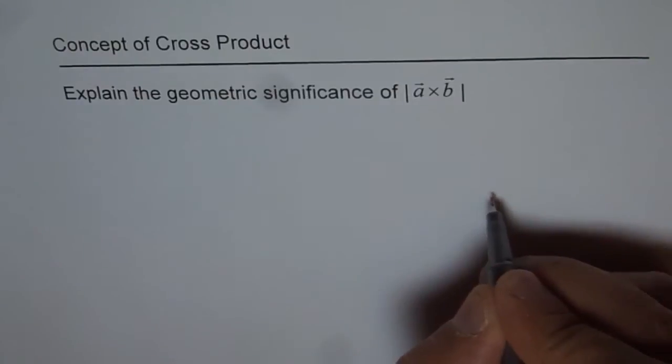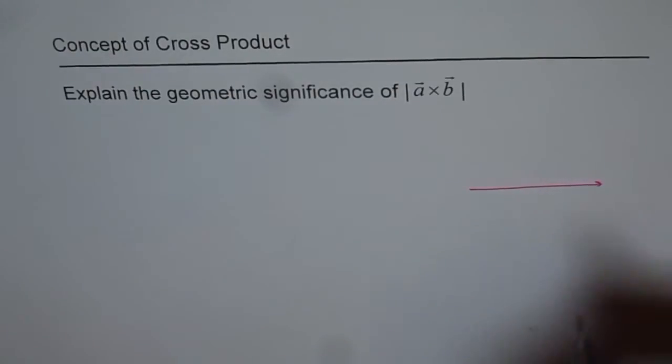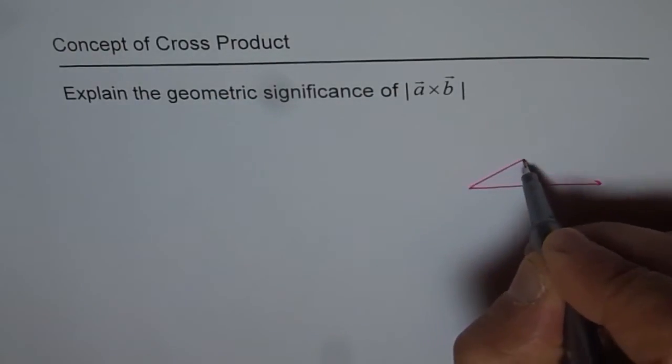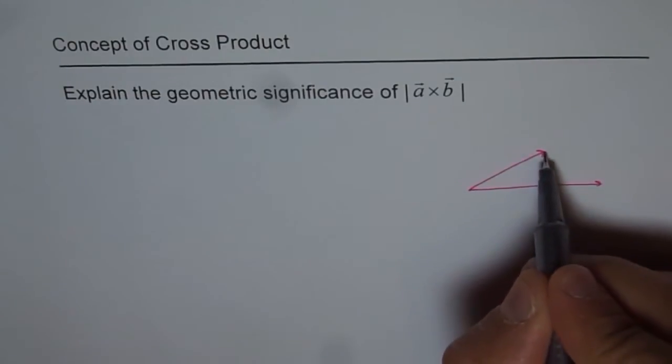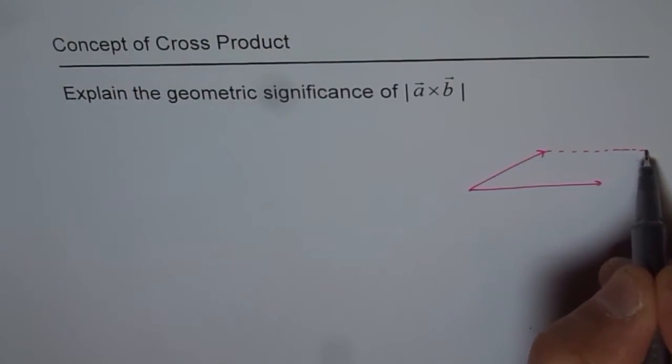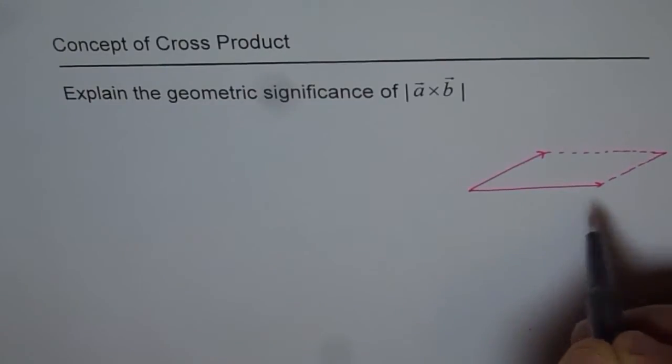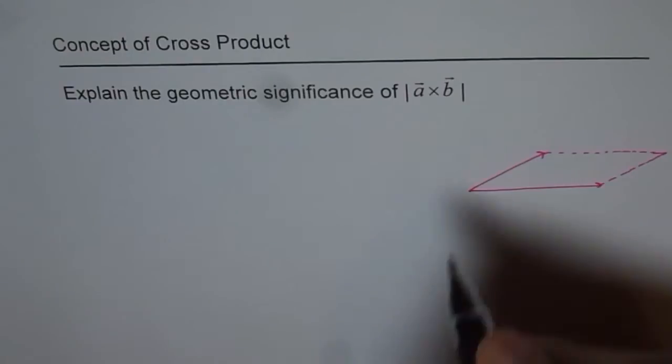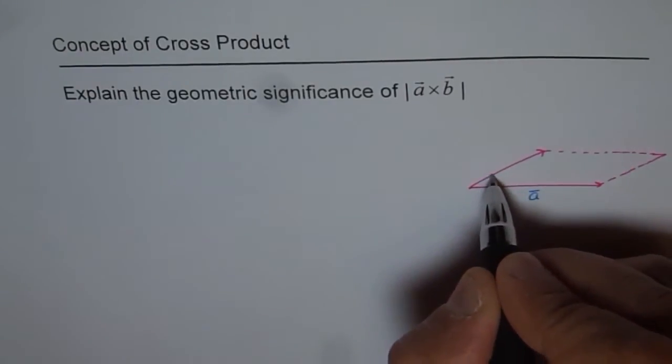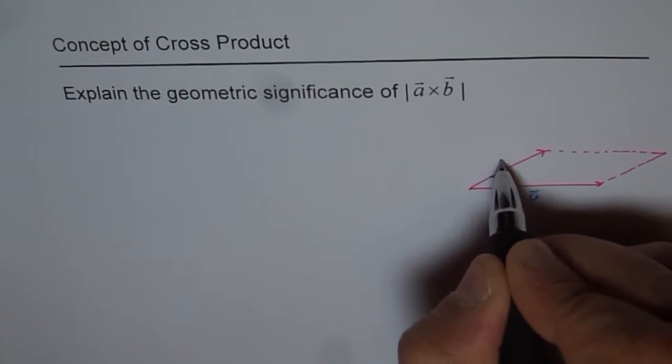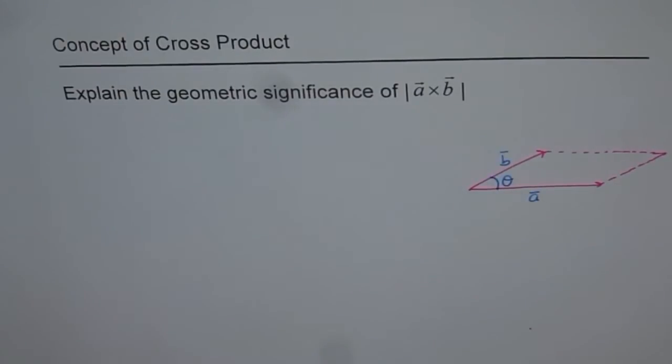So let's consider two vectors A and B. Let's say this is my vector A and that is vector B. Let's form a parallelogram with these vectors. So we'll have a figure like this. This is our parallelogram, which is where vector A is along this direction and the angle between them is theta and this is our vector B.